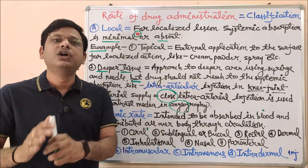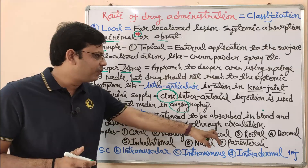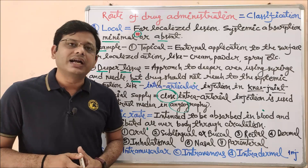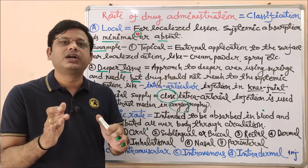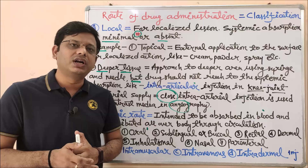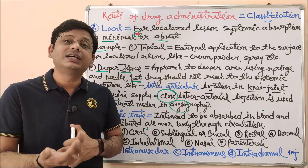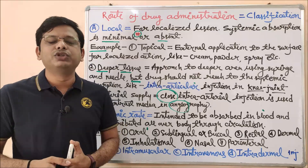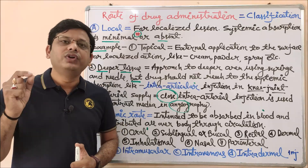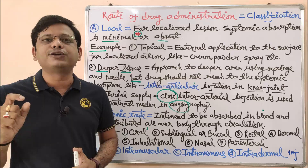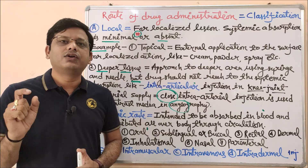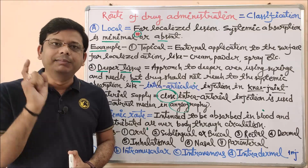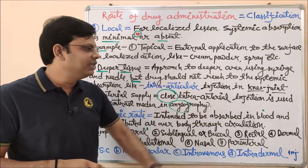Next is the rectal route. Some medicines have to be given by the rectal route if a particular drug causes irritation, vomiting, or any other unwanted effect via the oral route. Then that drug should be administered via the rectal route. If a desirable effect is needed locally — like in case of piles or hemorrhoids — the drug or cream should be applied only at that particular restricted part via the rectal route.